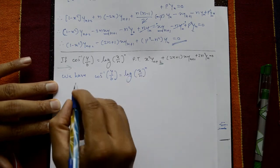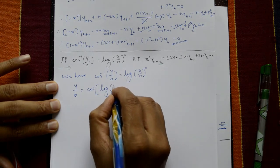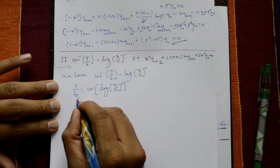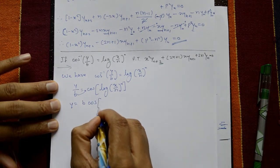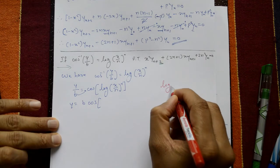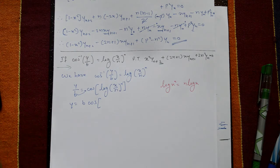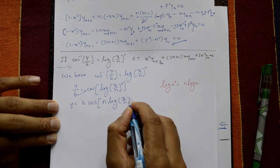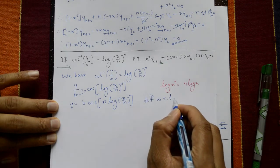Shift cos⁻¹ to the right: y/b = cos[log(x/n)ⁿ], so y = b · cos[log(x/n)ⁿ]. Using log property, log(x/n)ⁿ = n · log(x/n). So y = b · cos[n · log(x/n)]. Now differentiate with respect to x.